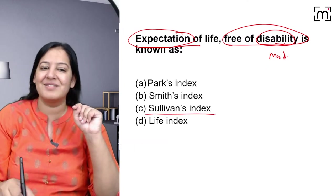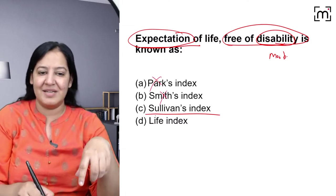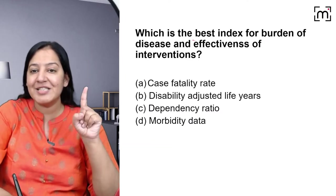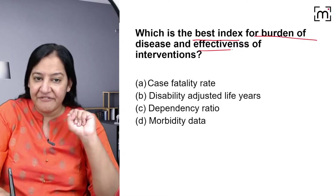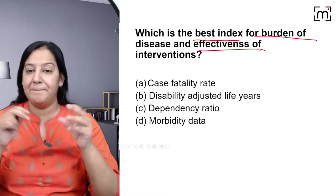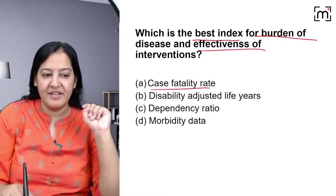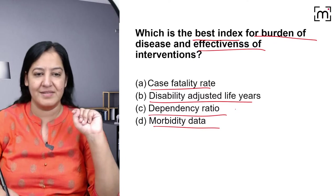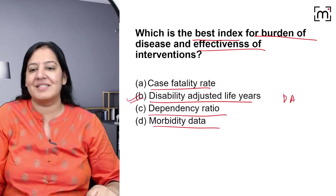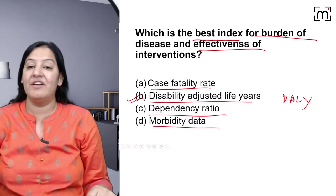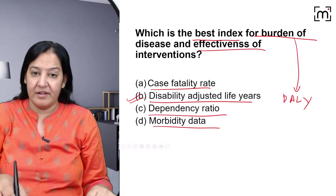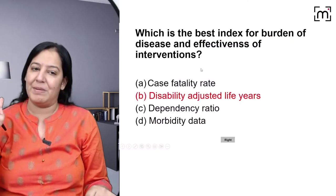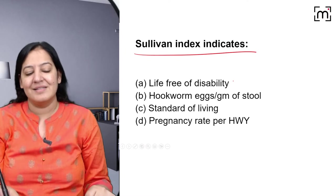Next question: which of the following is the best index for burden of disease and effectiveness of intervention? Options: case fatality rate, disability adjusted life years, dependency ratio, or morbidity data. The answer is B — Disability Adjusted Life Years, DALY. DALY gives the burden of disease, and by extension, the effectiveness of intervention in extending life ahead.